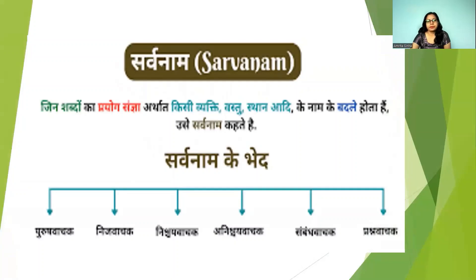What is pronoun actually? Jil shabdo ka prayug, sangya, arthaad, kisi vyati, vastu, sthaan, aadi ke naam ke badle hota hai — usay sarvnaam kerte hai. Yeh maara definition hai.